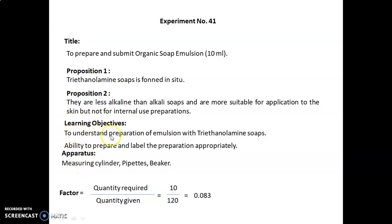Learning objectives of this experiment are to understand the preparation of emulsion with triethanolamine soaps and ability to prepare and label the preparation appropriately. Apparatus required are measuring cylinder, pipettes, beaker. Factor calculated as quantity required upon quantity given equals 10 upon 120, which equals 0.083.